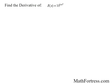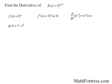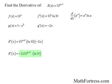Let's try this one. Find the derivative of r of x equals 10 raised to the power of 1 minus x squared. We see that this is a composition of functions, so we need to apply the chain rule. Our outer function is equal to 10 to the power of x, and our inner function is equal to 1 minus x squared. The derivative of the outer function is equal to 10 raised to the power of x times ln of 10. The derivative of the inner function is equal to negative 2x. So the derivative of r of x is equal to negative 2x, times 10 raised to the power of 1 minus x squared, times ln of 10.